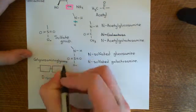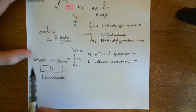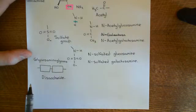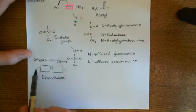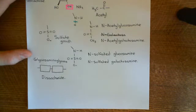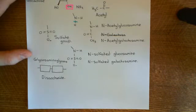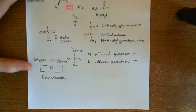Both heparan sulfate and heparin are glycosaminoglycans. However, the difference between them is that they have different compositions — which disaccharides they use most is different between the two. They are fundamentally different polysaccharides, although they're both made of the same disaccharide subunits, just in different amounts. Let's discuss the main disaccharides which make up glycosaminoglycans.